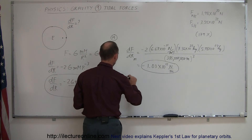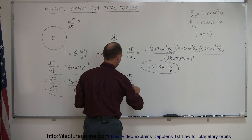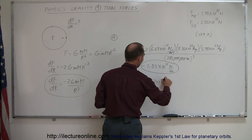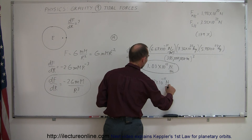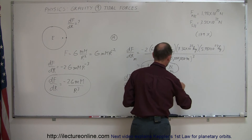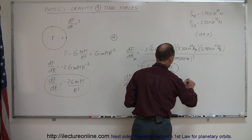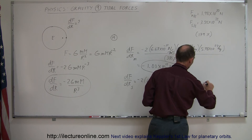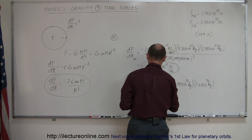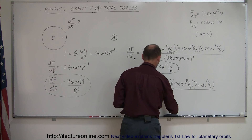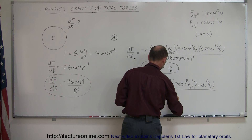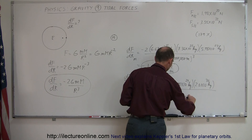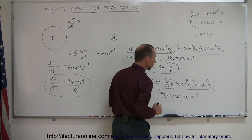Now let's do it for the Sun. The dF/dR for the Sun is equal to minus 2 times 6.67 times 10 to the minus 11 newtons per meter squared, times the mass of the Earth — which is the small mass in this case — 5.98 times 10 to the 24th kilograms, times the mass of the Sun, 2.0 times 10 to the 30th kilograms, divided by the average distance between the Earth and the Sun — roughly 149.5 million kilometers, or 149.5 times 10 to the 9th meters — and we cube that.